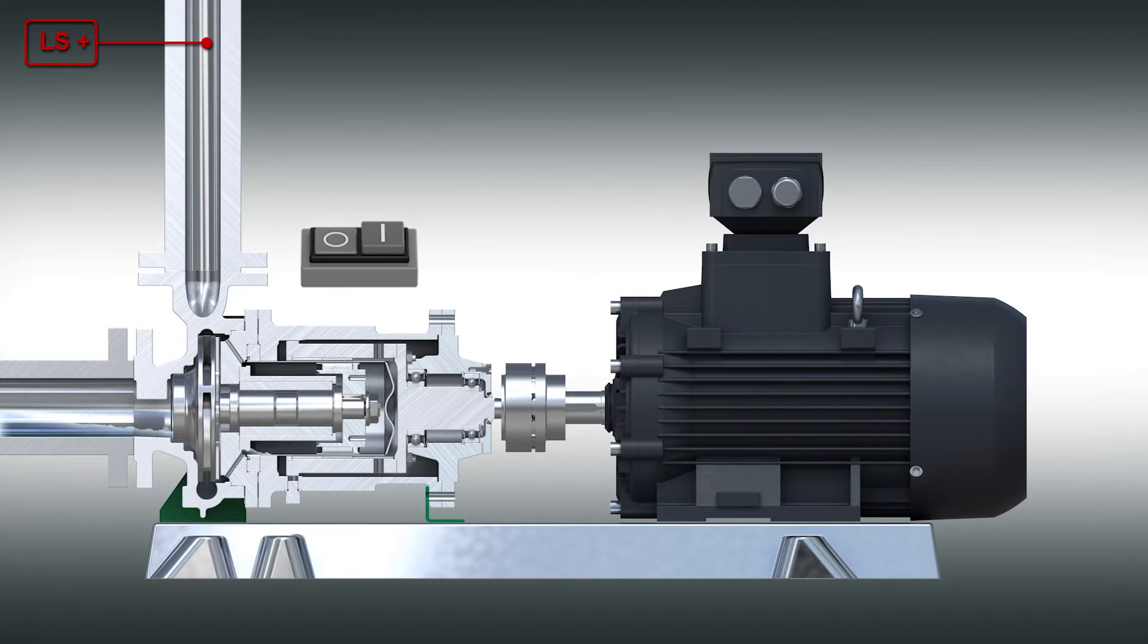Before the pump is started, the existing cavities in the pump are vented by filling them through the suction nozzle. The air is displaced towards the pressure side. The hermetic magnetic drive pump is self-venting.